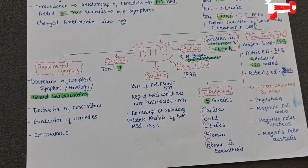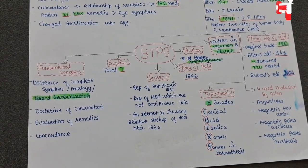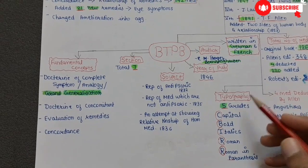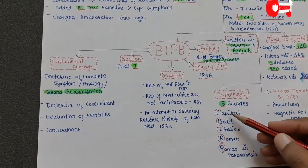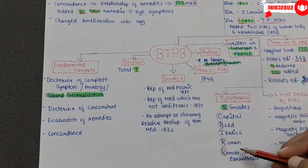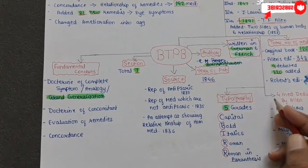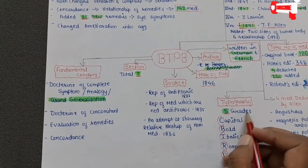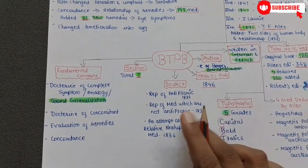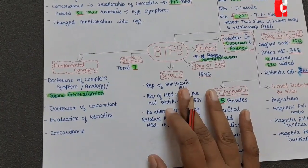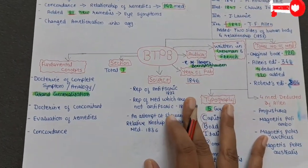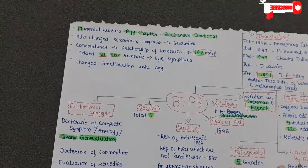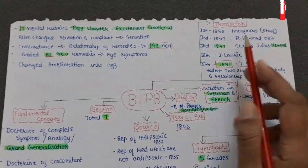Since BBCR is based on BTPB, the typography will be the same in both. There are five types: Capital, Bold, Italic, Roman, and Roman in parenthesis. These five typography styles apply to both BBCR and BTPB.